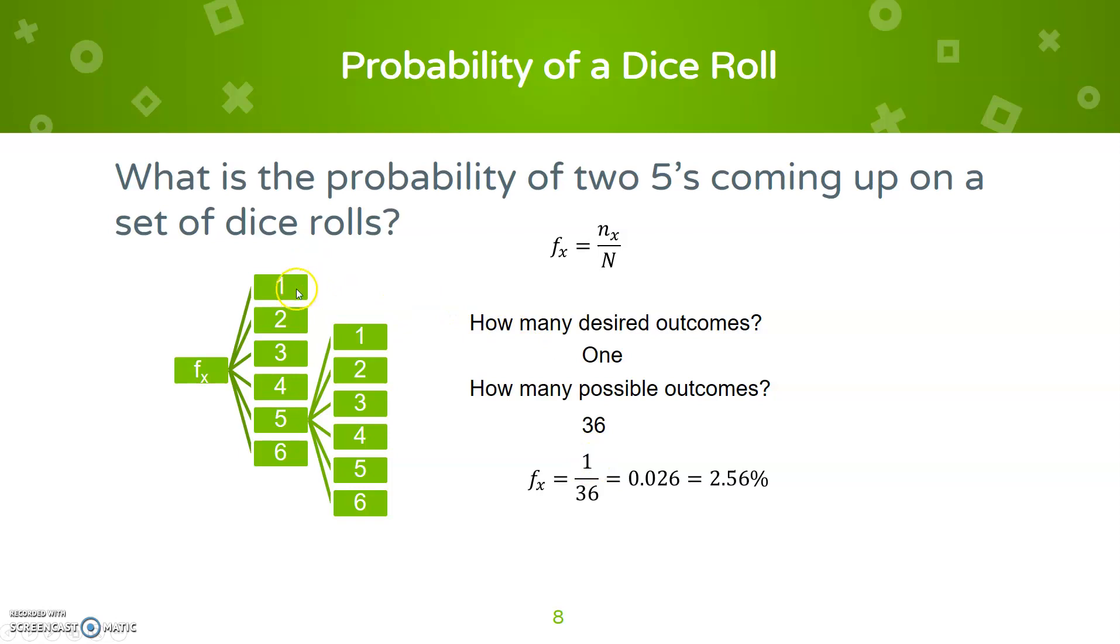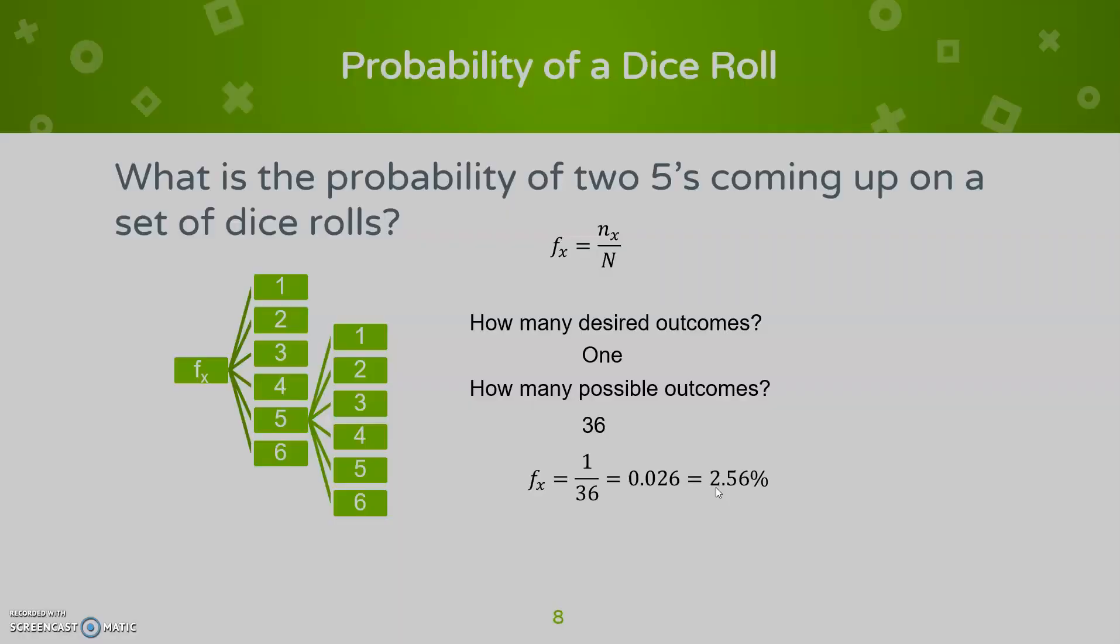If I roll a one, my second dice could be any one of six. My two could be any six, any number one through six. And we can do that for all of this. This is called a probability tree, and it's every possible combination there is. There are 36 total combinations, so we get one-thirty-sixth or 2.56% chance of that occurring.